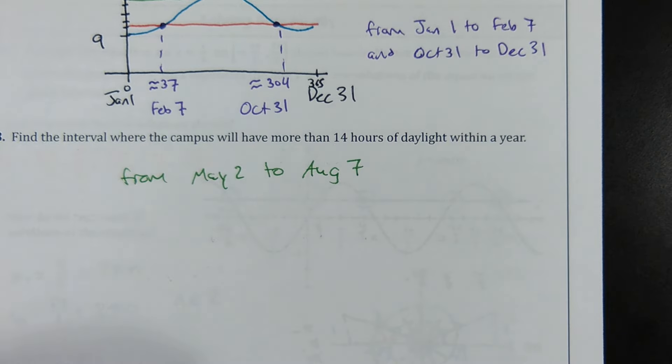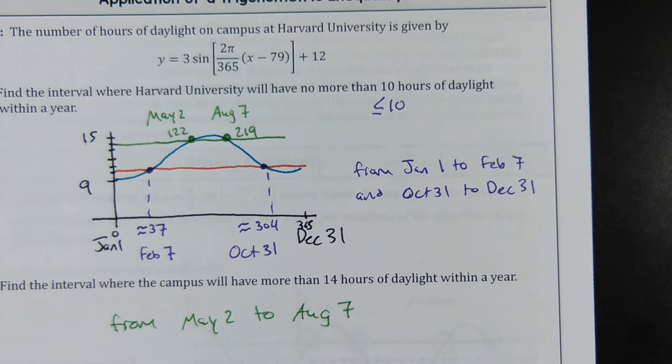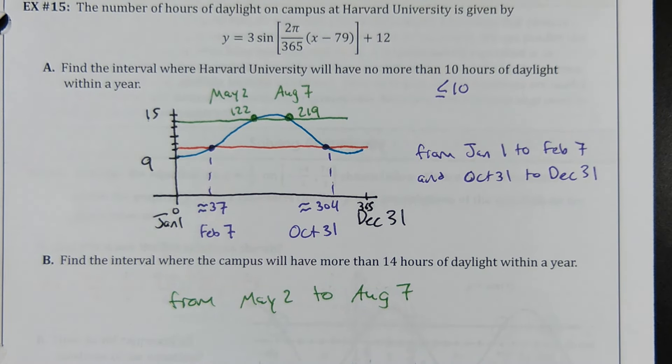And again, College Board is not going to make you know dates compared to what day of the year it is. Oh, that's the 157th day. Like, they're not going to make you do that. That would be ignorant. Nobody is that big of a nerd.